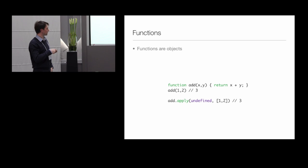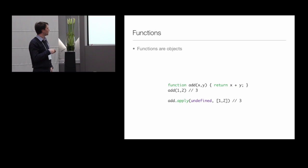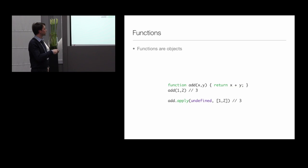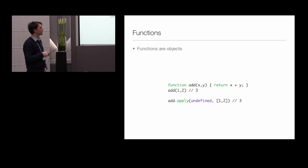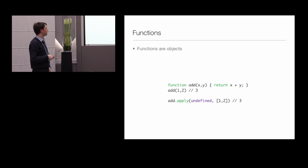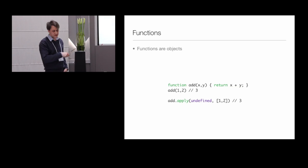The first parameter to apply is the this-binding of the function. In JavaScript, a function body can refer to the special keyword this. By passing an extra parameter to apply you can set the value of the this-binding. Since the add function doesn't use this, I pass undefined. Calling the function directly or calling it via apply is more or less equivalent in this case.